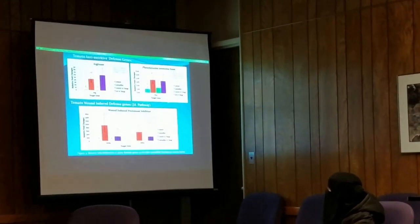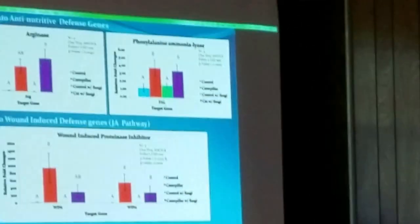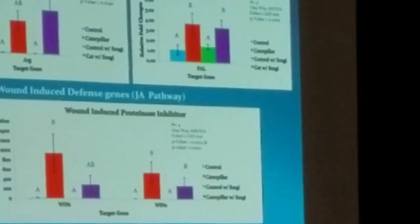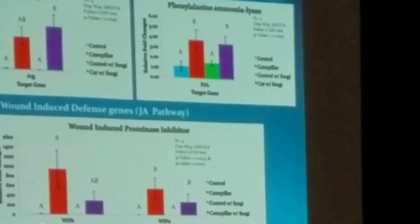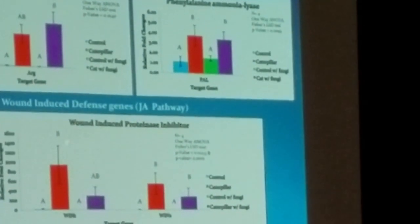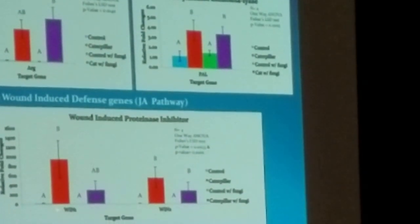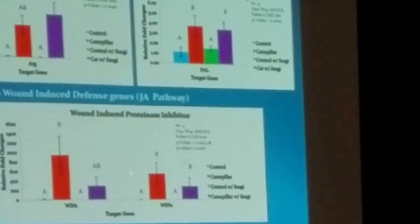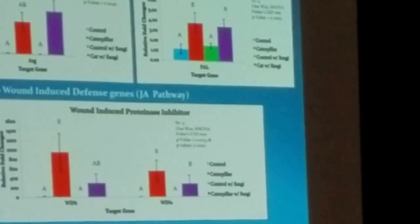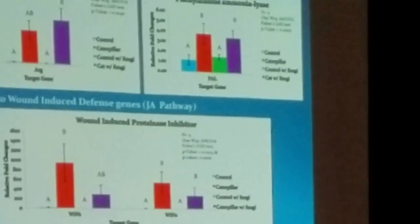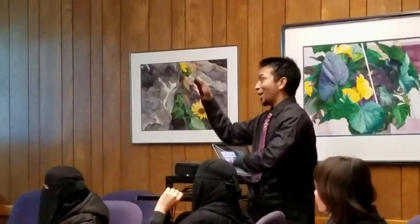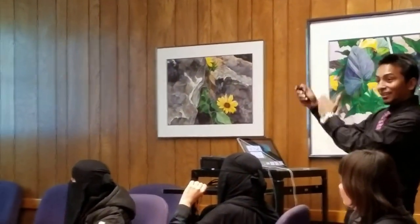These two genes are the wound-induced proteinase inhibitors — Win-1 and Win-2 — two genes against a same function but having some structural difference. In the presence of caterpillar, they are highly up-regulated. But the presence of fungi down-regulates these genes. The same trend is happening in Win-2. In gene expression analysis, observing the trend is very much important. That's why I always refer to look at the trend.